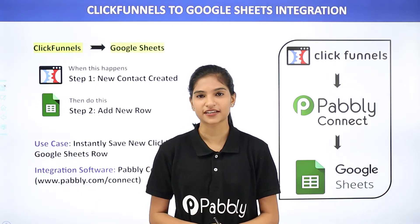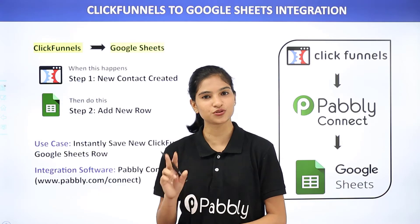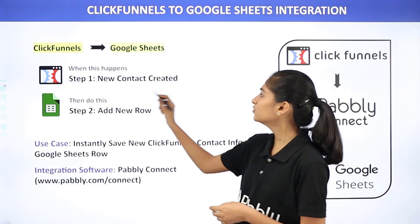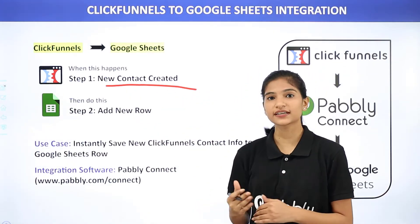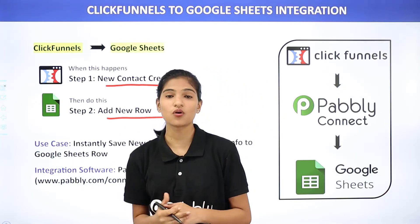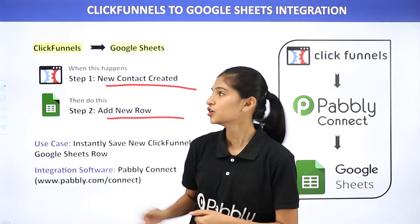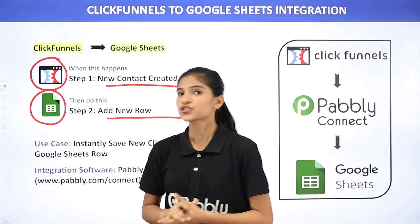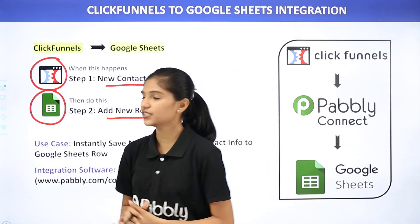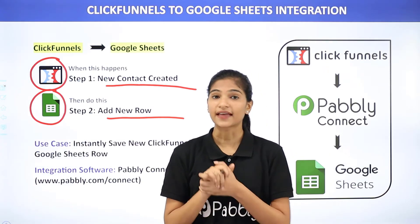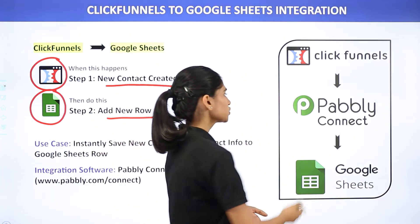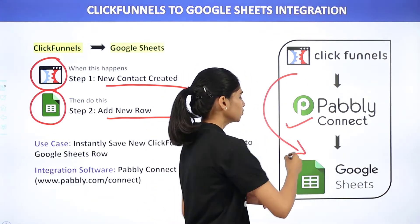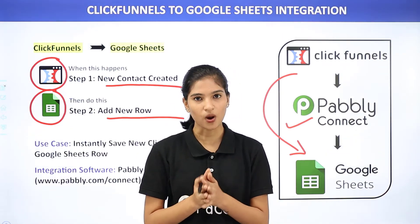Hello everyone, welcome to Pabbly Connect. Today in this video we are going to integrate two software applications: ClickFunnels and Google Sheets. The use case here is whenever a new contact is created in ClickFunnels, automatically add a new row in Google Sheets. ClickFunnels is a website and sales funnel builder, whereas Google Sheets is an online spreadsheet program. Since ClickFunnels and Google Sheets don't have any integration between them, we are going to use Pabbly Connect, an integration software which will help you transfer data from ClickFunnels to Google Sheets. The best part is you don't require any knowledge of coding.